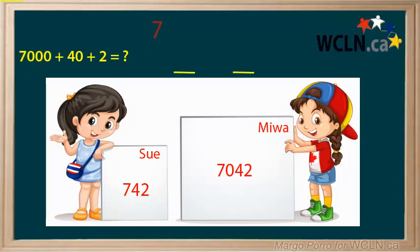The 7 goes in the thousands place. The 4 goes in the tens place. The 2 goes in the ones place. We need to fill in a 0 in the hundreds place as there are no hundreds. As you can see, Miwa is correct.